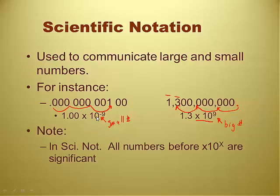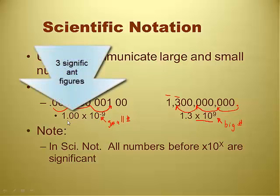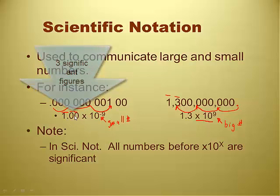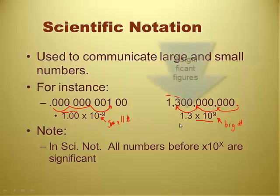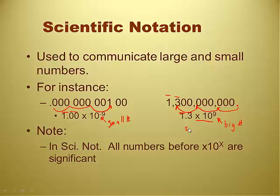All numbers before the exponent are significant. Sounds easy enough. So the example on the left has three sig figs and the example on the right has only two? Yeah, that's what it looks like because we got 1.00, so those zeros are significant because the decimal's there. And 1.3, which is two sig figs. So two here and three sig figs there.